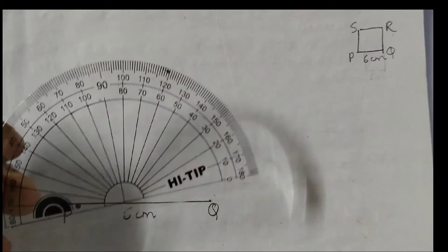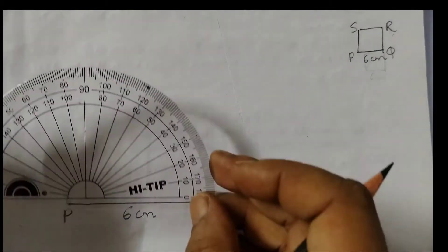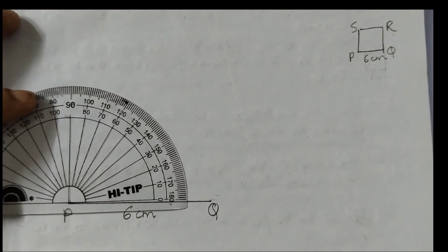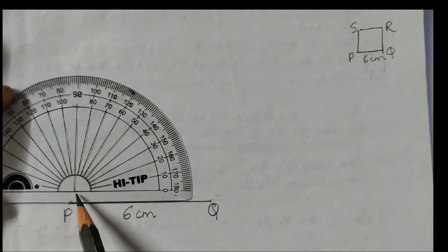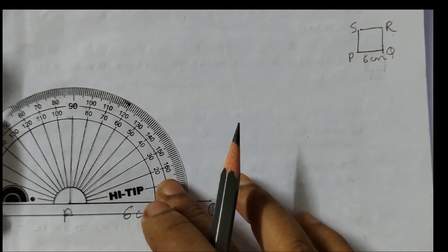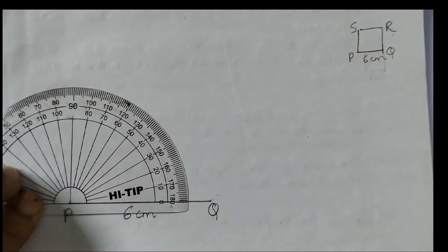Second step, you take the protractor and draw perpendicular. So to draw the perpendicular place the protractor like this. This point you can see here. This and this should match. Okay, so just overlap it like this.